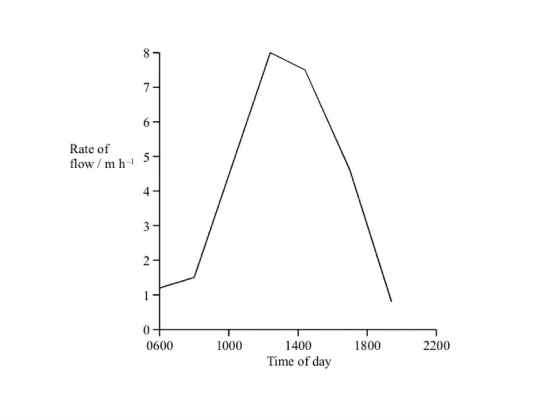The rapid increase in rate of flow could be due to an increase in temperature as the day progresses and an increase in light intensity, which causes more stomata to open. Both factors increase the rate of transpiration. If there's more transpiration, there's more tension — more pulling on the water — which increases the rate of flow.